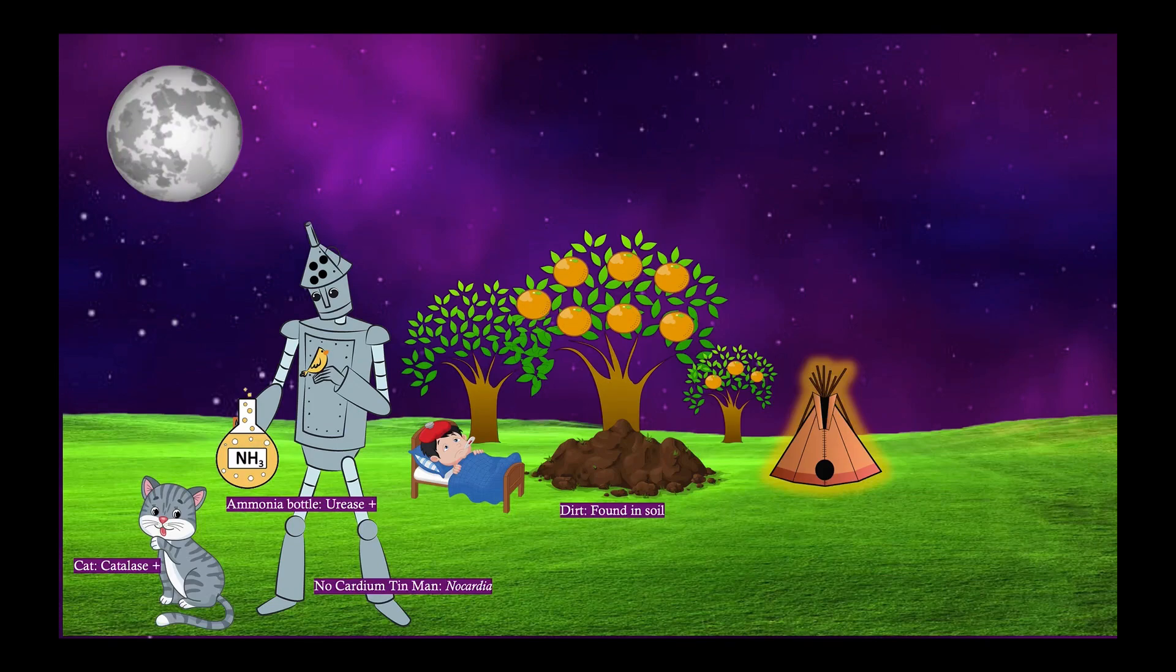And notice that some of these trees are growing oranges. And that's because they are partially acid fast. Oranges are acidic. Some of the trees are growing oranges because this is partially acid fast.